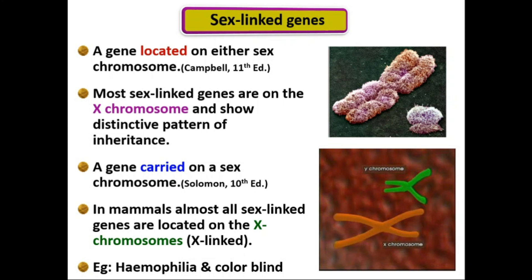The inheritance divided from Mendelian genetics is what we call sex-linked genes. A sex-linked gene is one located on either of the sex chromosomes. According to Campbell, most sex-linked genes are on the X chromosome and show a distinctive pattern of inheritance. In mammals, almost all sex-linked genes are located on the X chromosome, which is why we also call them X-linked.